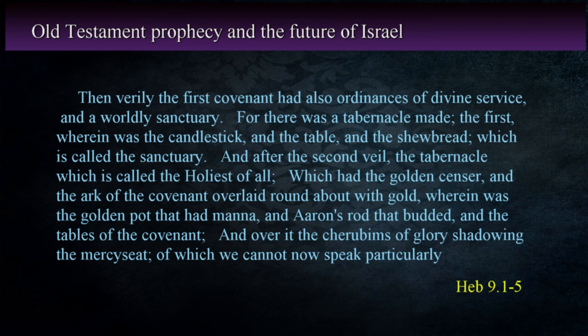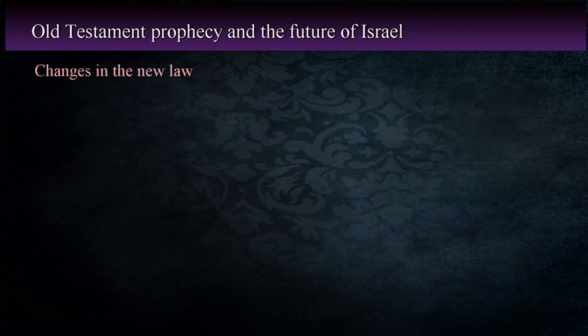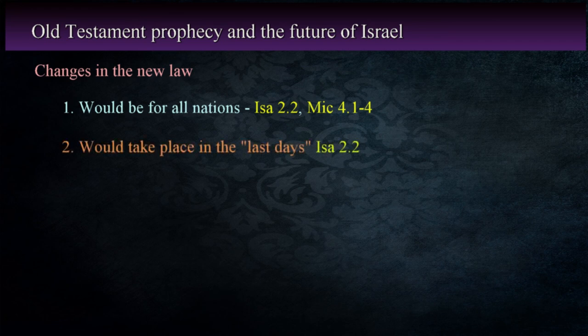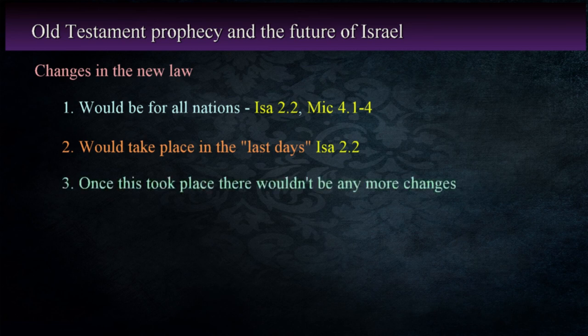With the change of the covenant, everything changed with it. The new law would be for all nations, not just the descendants of Abraham, as stated in Isaiah 2:2 and Micah 4:1-4. Isaiah states this would take place in the last days in Isaiah 2:2, which indicates that once the changes foretold were in place, there wouldn't be any more.